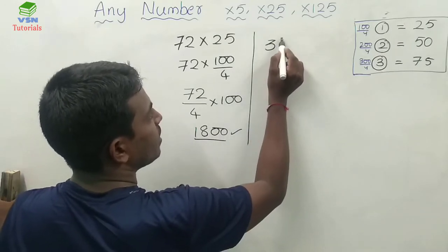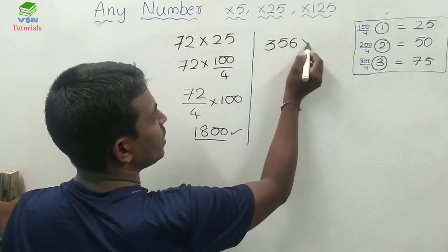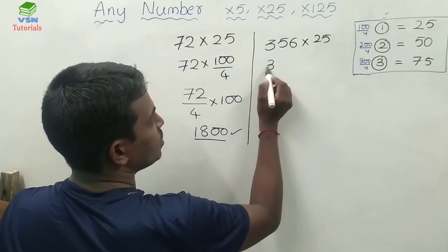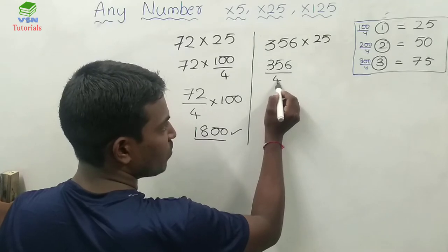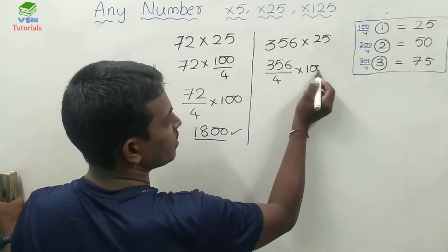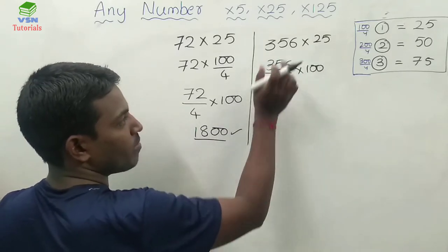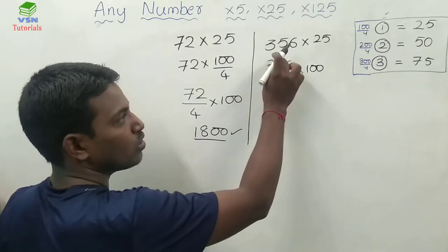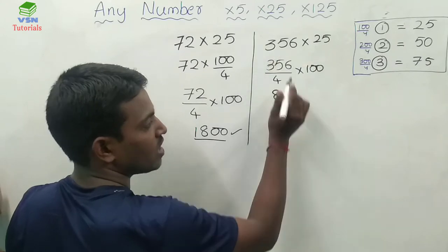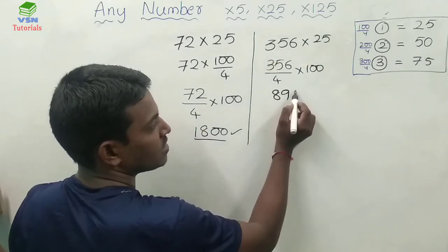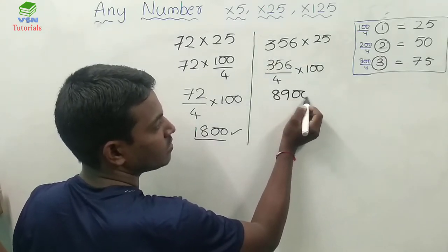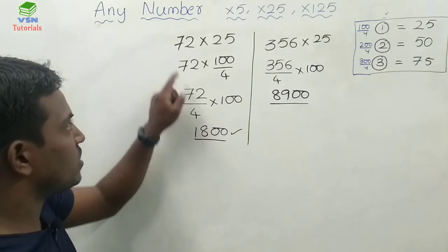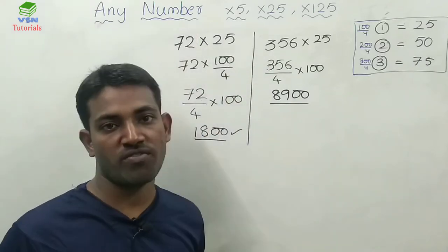Now take 356 into 25. That means 356 divided by 4, then multiplied by 100. Dividing 356 by 4: 35 divided by 4 gives 8 remainder 3; 36 divided by 4 gives 9. So 356 divided by 4 is 89. 89 into 100 is 8900. If you observe, these two numbers are exactly divisible by 4.